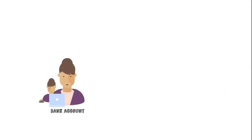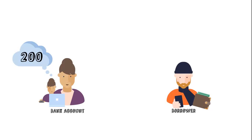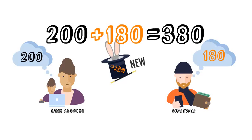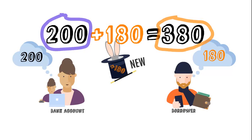Imagine you check your online banking and see the 200€ you deposited in your bank account. On the other side, the borrower looks into his wallet and finds the 180€ there, so the sum is 380€. Remember, only 200€ were brought to the bank and now somehow another 180€ were magically created out of thin air. Only 200€ exists physically, but the economy acts like there were 380€.